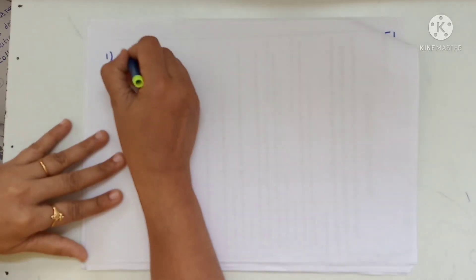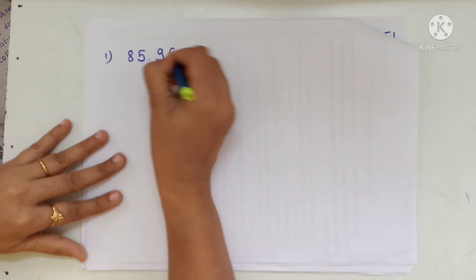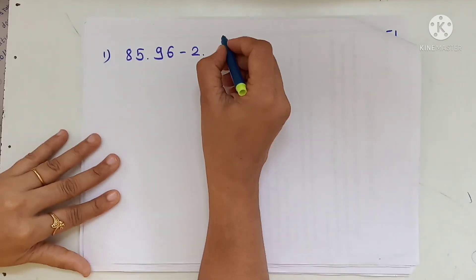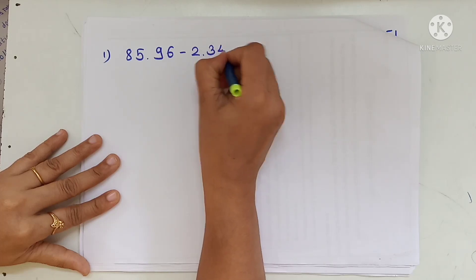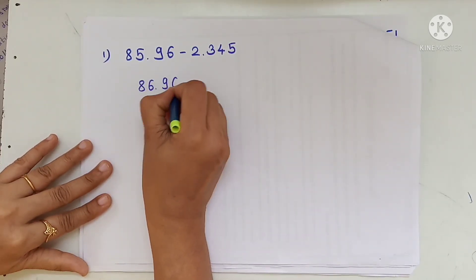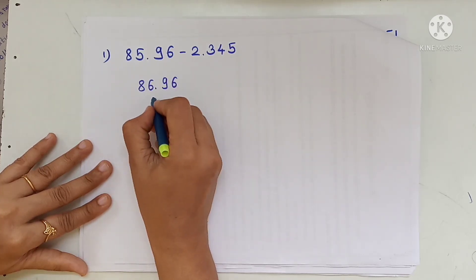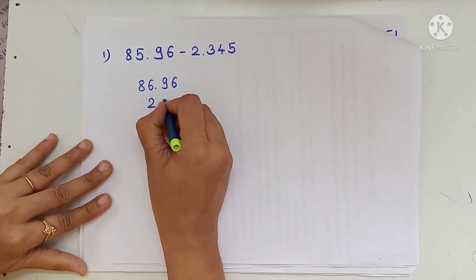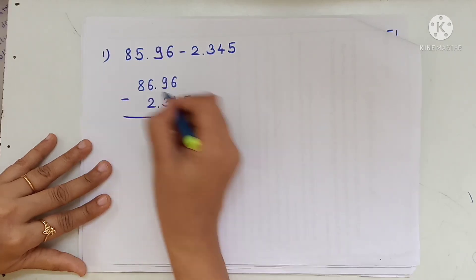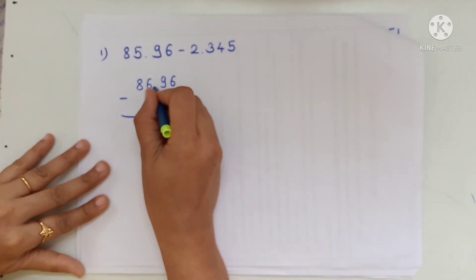Now, 85.96 minus 2.345. We write 85.96 and 2.345. We have to put point under point.